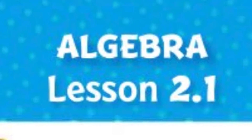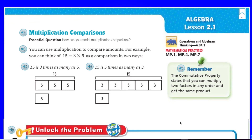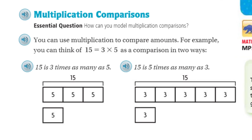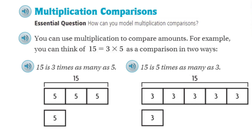It's lesson 2.1. We're starting a brand new chapter — finished chapter one. Now we're going to be looking at multiplication comparisons. That's our topic, and the driving force that lets us know the purpose of why we're learning this comes in our essential question, because this is the overview of what this lesson is going to teach us. Basically, this is: how can you model multiplication comparisons? So we're going to be comparing some things with multiplication.